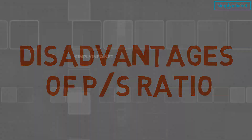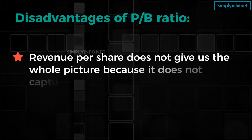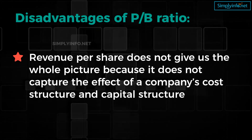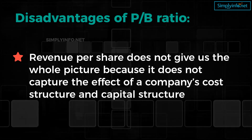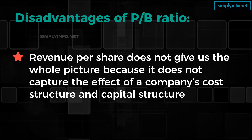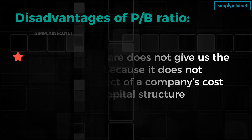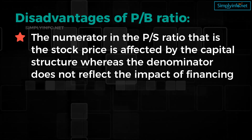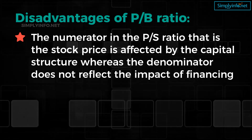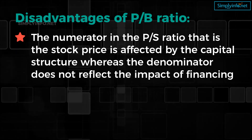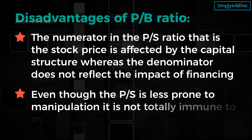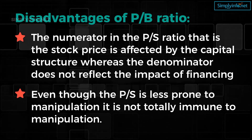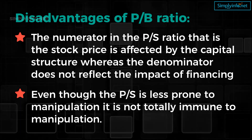Let's look into the disadvantages. Revenue per share does not give us the whole picture because it does not capture the effect of a company's cost structure and capital structure. Just generating high revenue is not enough, because investors worry about net addition to their wealth, which is achieved only when revenue translates to net income. The numerator in the PS ratio — the stock price — is affected by capital structure, whereas the denominator does not reflect the impact of financing, which creates a potential disconnect between the two variables. Even though the PS ratio is less prone to manipulation, it is not totally immune. Revenue recognition policies may need to be thoroughly studied to make sure revenue is not overstated or understated in a period.